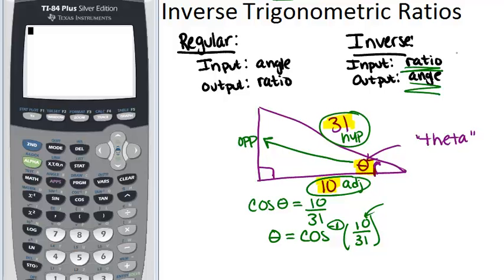And all of the inverse trig ratios have this little negative 1. So the inverse trig ratios are sine inverse, cosine inverse, and tangent inverse, while the regular ratios were just sine, cosine, and tangent.